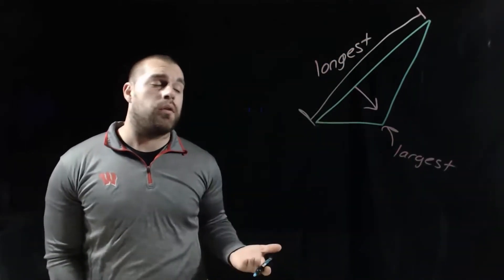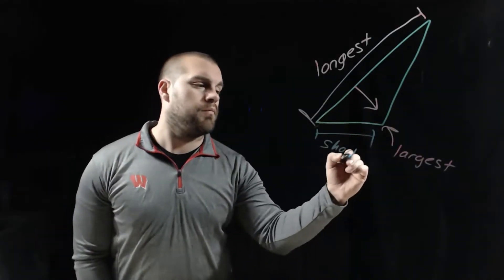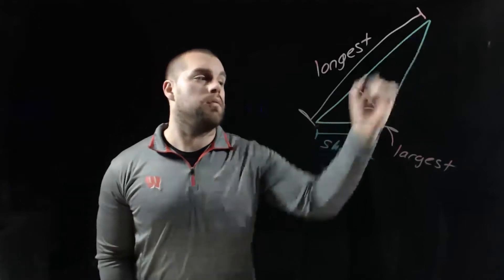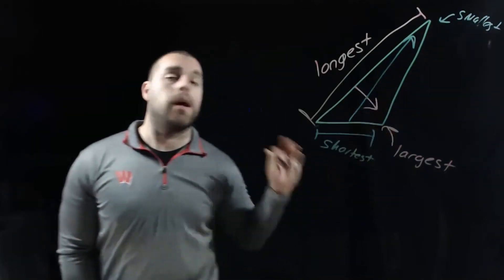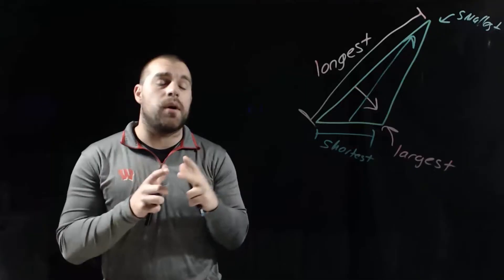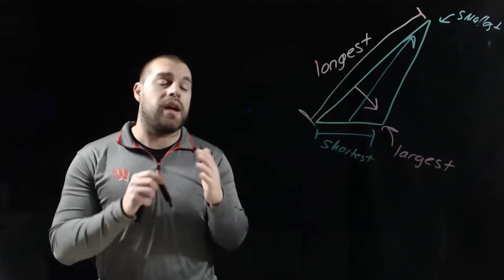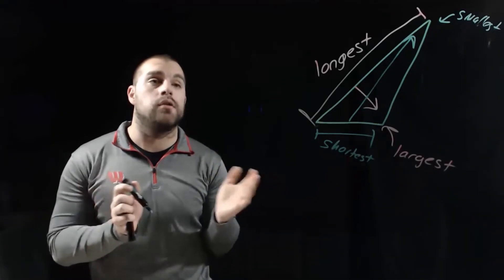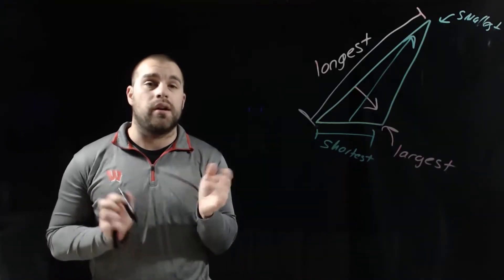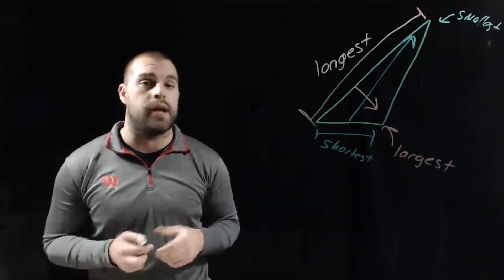It works the other way too. The shortest side of our triangle, across the bottom here, is always going to be directly across from the smallest angle. This holds true for any triangle, and it's really about how wide those angles are opening up. Obtuse or bigger angles open up wider, creating long sides, while small angles don't open as wide, so they're across from short sides.